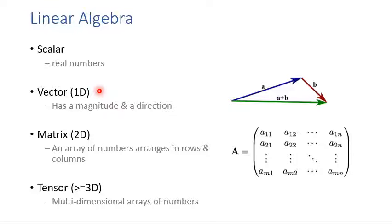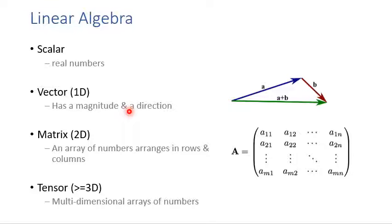A vector has two independent properties: magnitude and direction. But in machine learning, especially in computer science, most of the time we just care about the magnitude, because we use vectors to store a series of values — we view arrays as vectors in linear algebra.